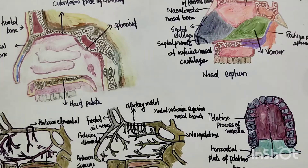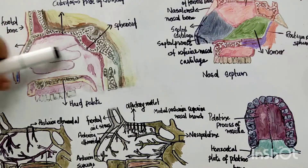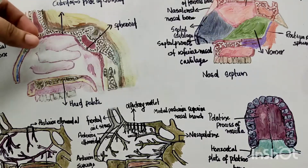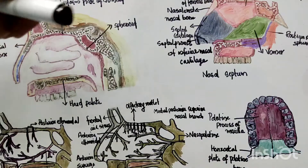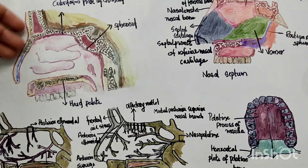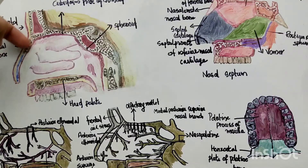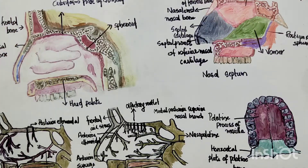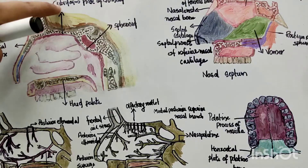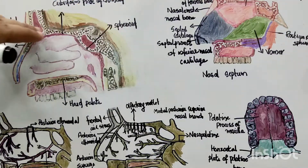The roof of the nasal cavity is about seven centimeters in length and about two millimeters wide. It has an anterior slope, a posterior slope, and a middle horizontal part. The anterior slope is formed by the nasal part of the frontal bone, the nasal bone, and the nasal cartilage. The middle horizontal part is formed by the cribriform plate of the ethmoid bone.